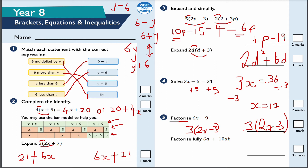Next: factorize fully 6A plus 10AB. The highest common factor includes a number and a letter because there's an A common in both terms. The highest common factor between 6 and 10 is 2, so we take out 2A. Then 2A times 3 gives 6A, and 2A times 5B gives 10AB. So the answer is 2A(3 plus 5B), or 2A(5B plus 3) — either way is correct. Just make sure you're consistent with your signs.